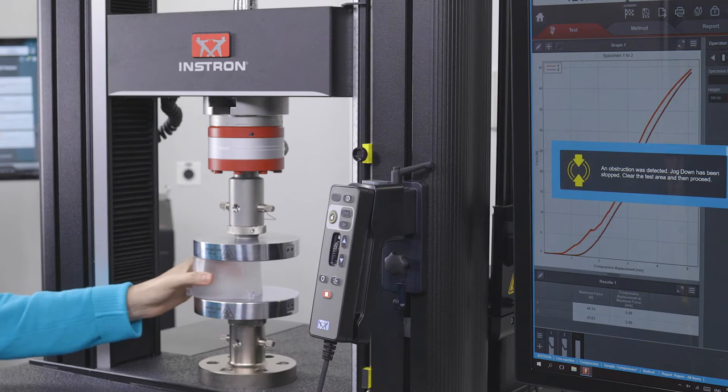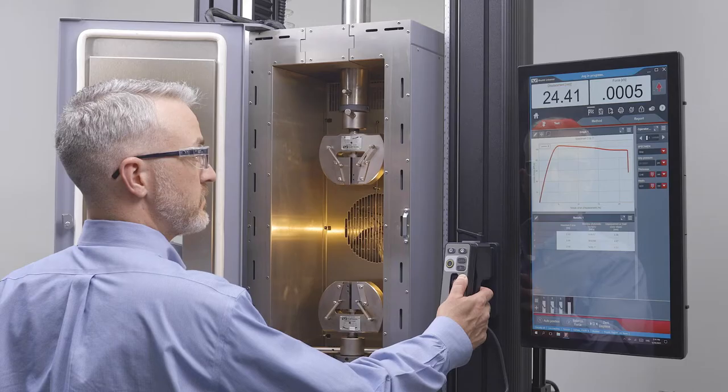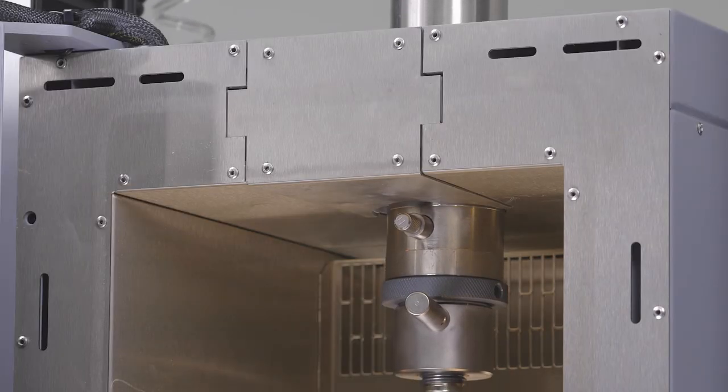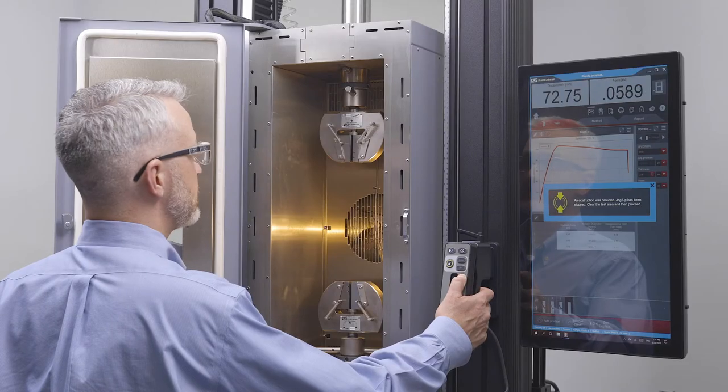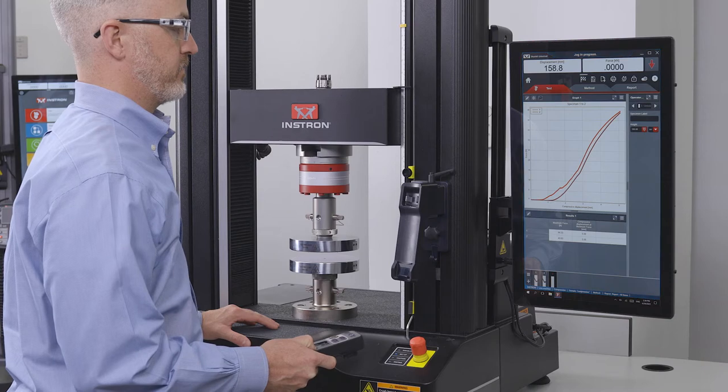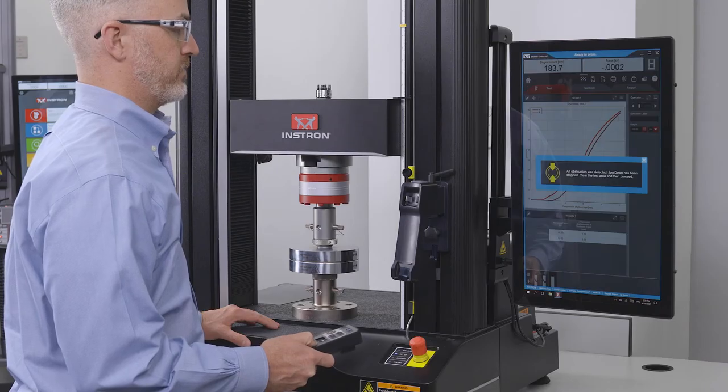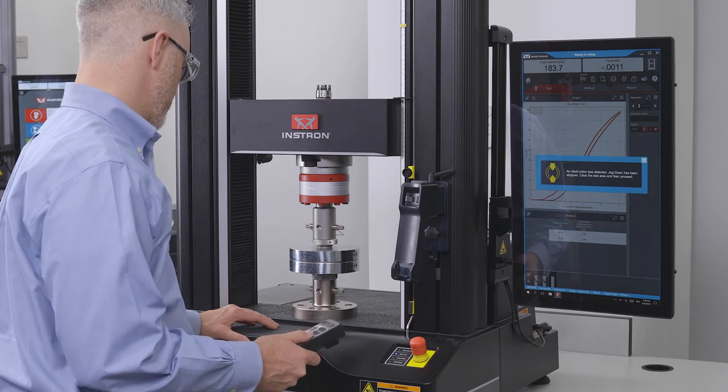Collision Mitigation works in both tension and compression. Its ability to protect the load cell and fixtures is highly dependent on the test setup. It has been rigorously tested and confirmed to protect load cells matching the capacity of the test frame for crosshead speeds up to 600 millimeters per minute.